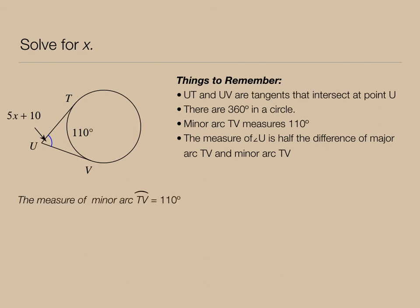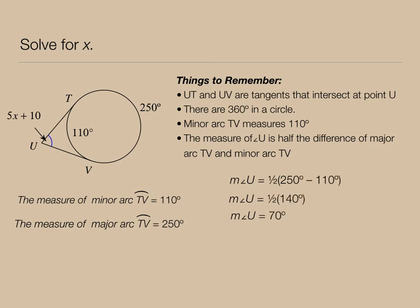So we can solve this. We know that minor arc TV is 110 degrees, therefore major arc TV must be 250 degrees. The measure of angle U then is half the difference. I know that the measure of angle U must be 70 degrees. Therefore, the algebraic expression that's given, 5x plus 10, must be 70 degrees. Now I'll just subtract 10 from both sides of the equation and divide both sides of the equation by 5, and I know that x equals 12.